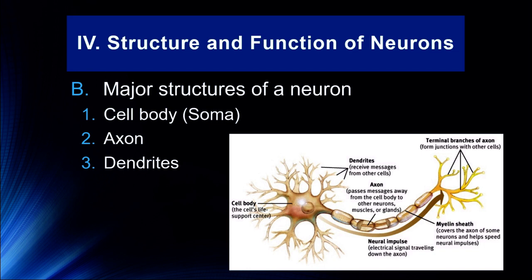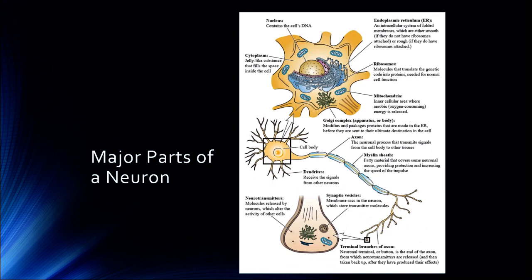We'll talk about neurotransmission and how an action potential gets sent down the full length of the axon. In the cell body itself is the cytoplasm, the cell nucleus containing the cell's DNA, the endoplasmic reticulum, ribosomes that translate genetic codes into proteins, and mitochondria where energy is released. The Golgi complex is very important in neurons as it modifies and packages proteins, particularly neurotransmitters, which are then sent down the full length of the axon to the terminal branches where they are released by synaptic vesicles.